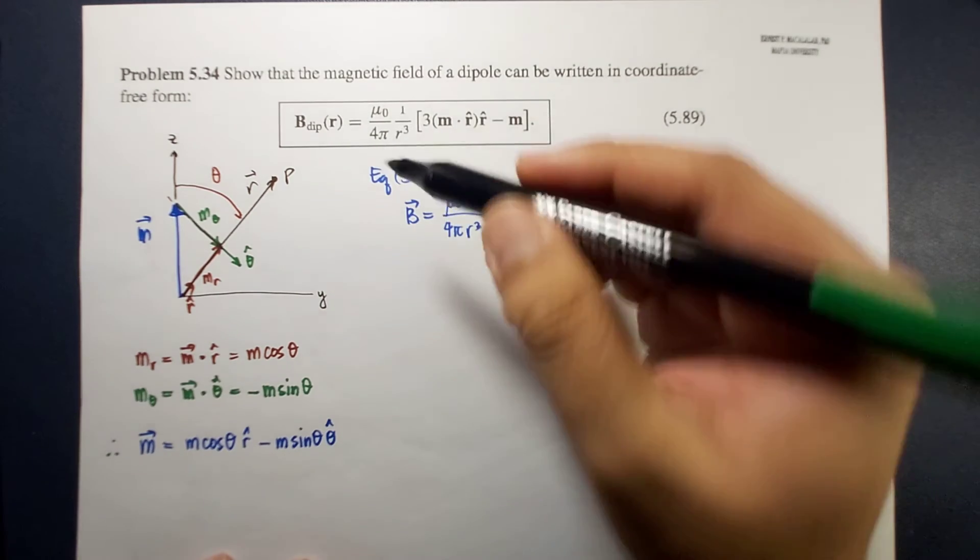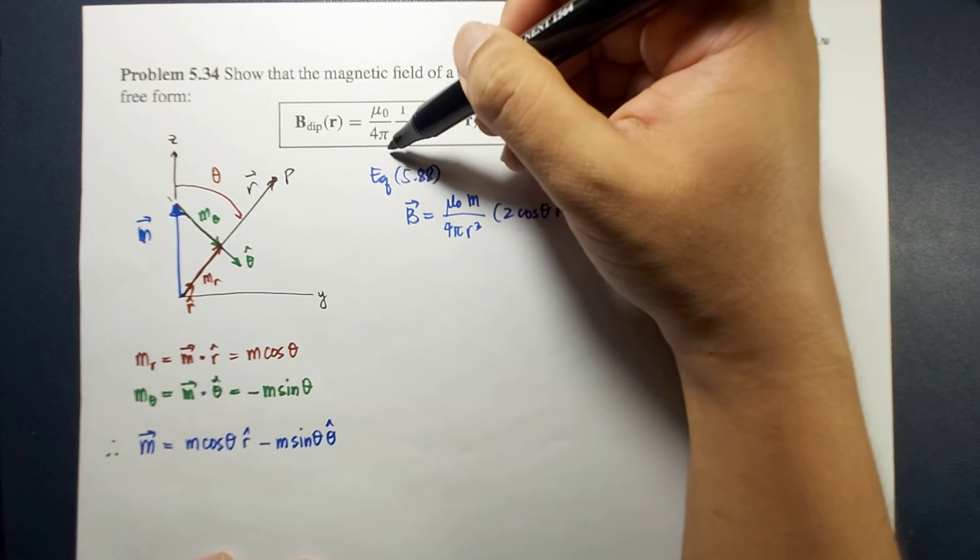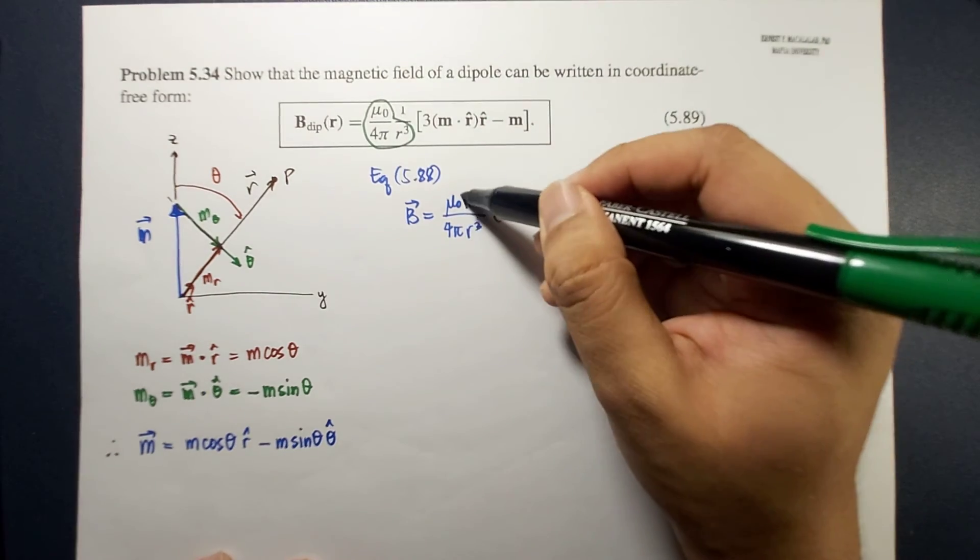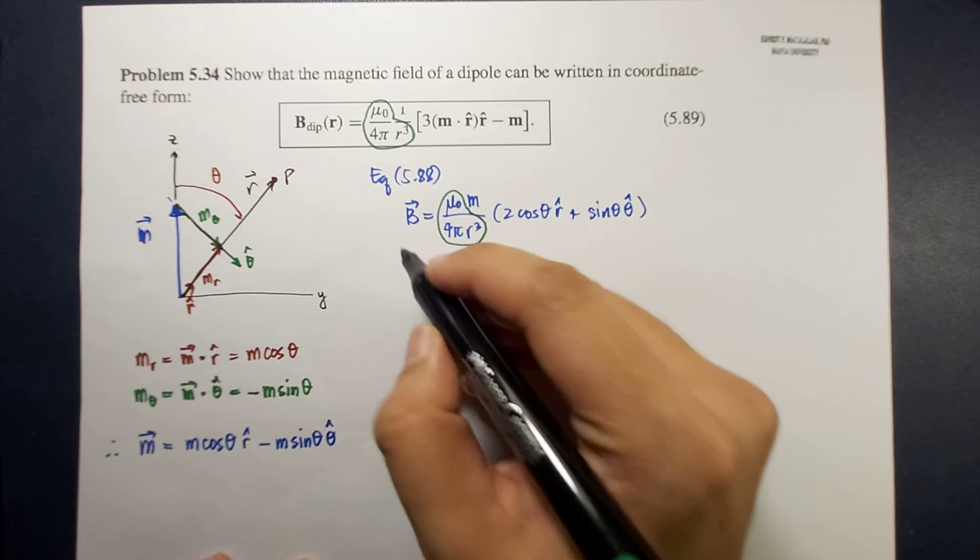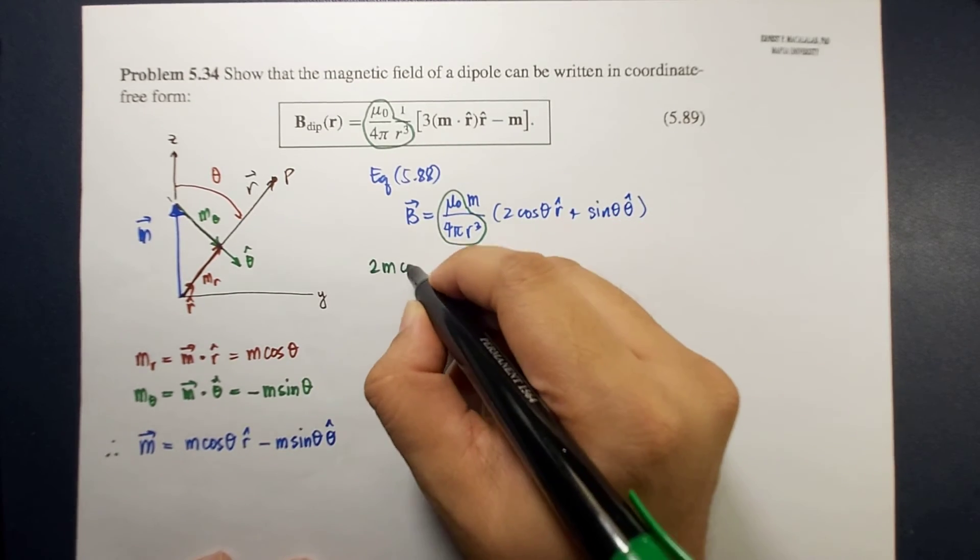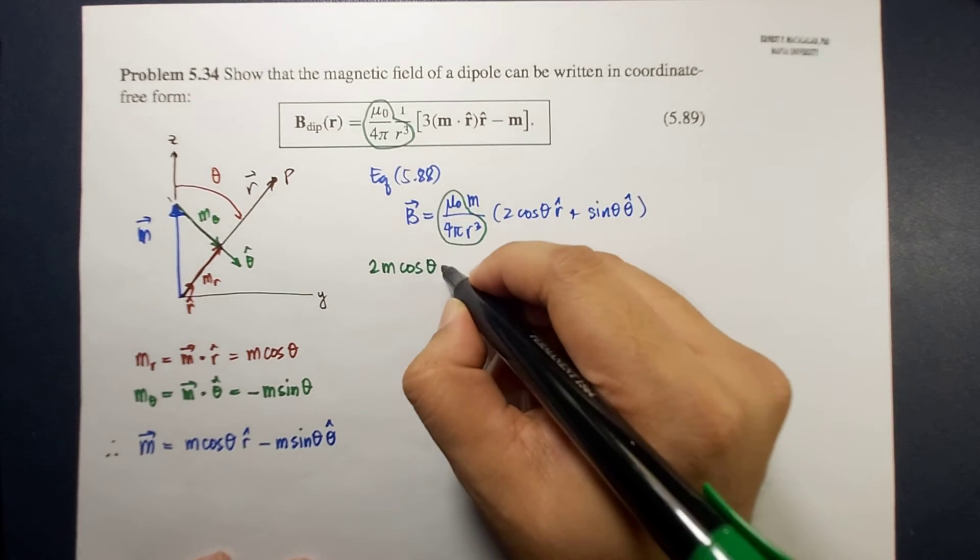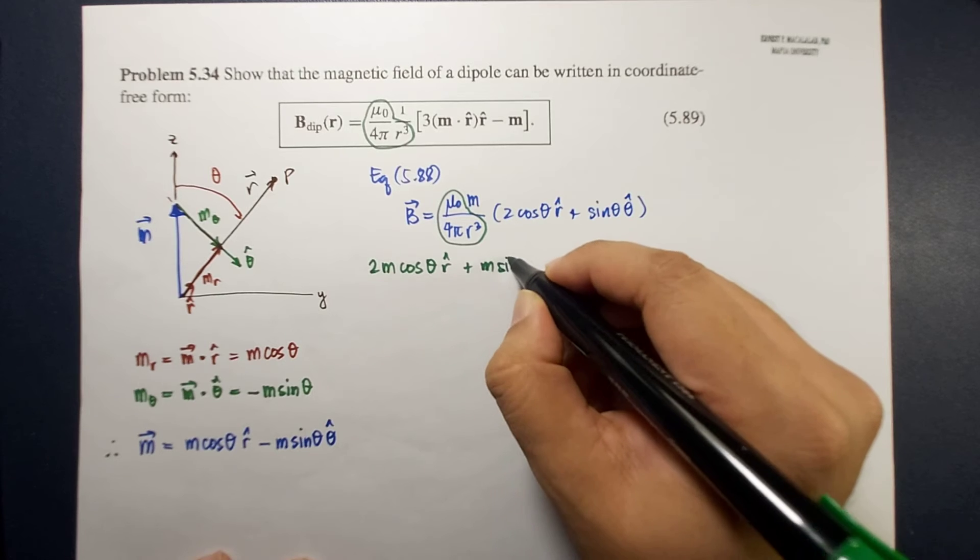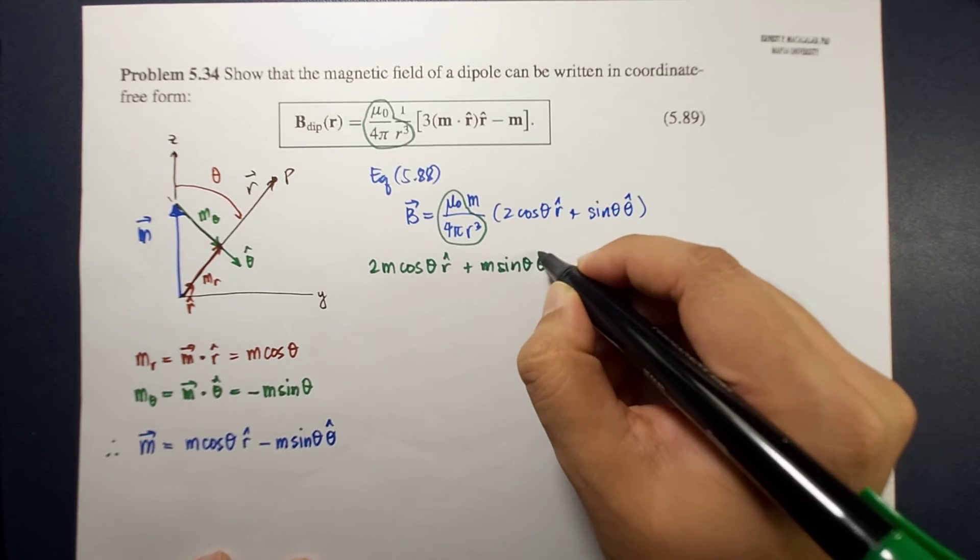Okay, so we can set aside this coefficient. So let's focus on m times 2 times cosine theta r hat plus m sine theta theta hat.